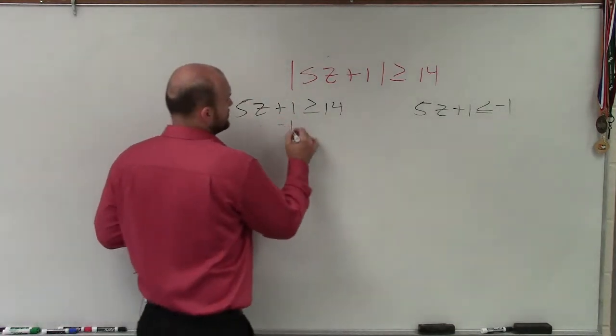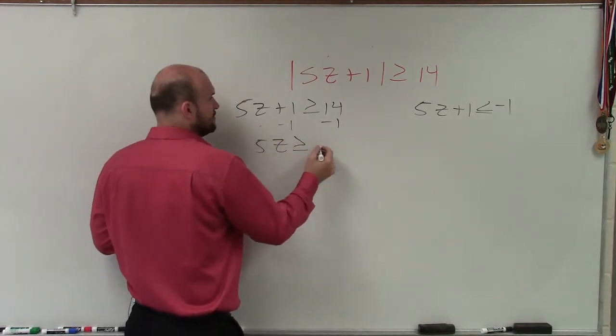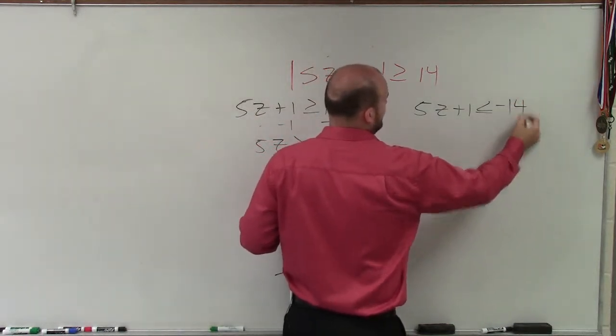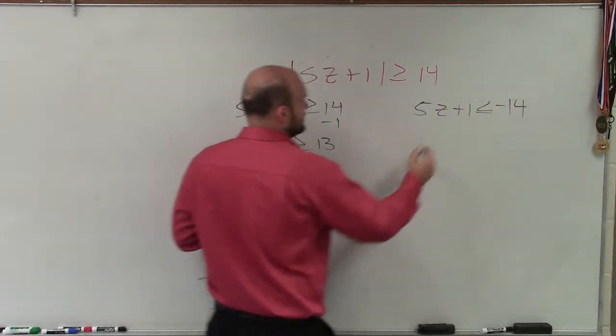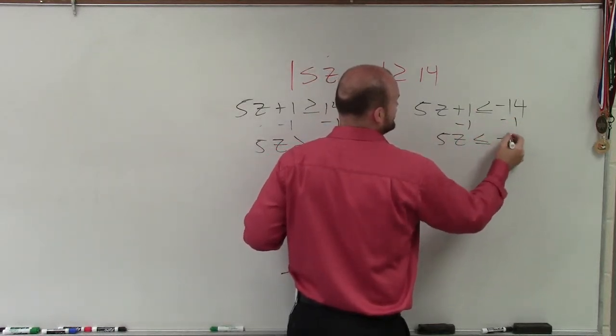So I just solve for each one. I subtract 1, subtract 1. Here I have 5z is greater than or equal to 13. And then over here, negative 14. I don't know where negative 1 came in. Here I subtract 1, subtract 1. I have 5z is less than or equal to negative 15.